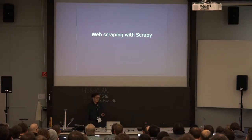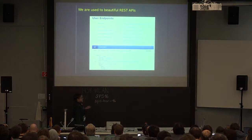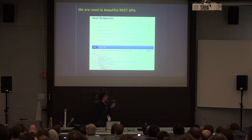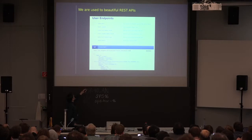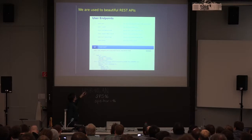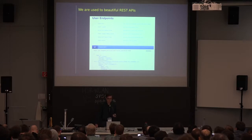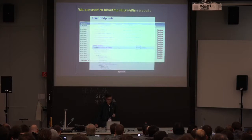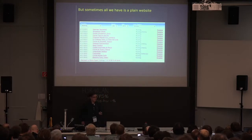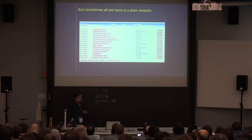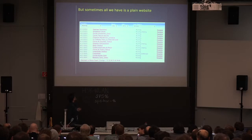So — web scraping with Scrapy. We're all used to beautiful REST APIs. I've taken an example here from Instagram: you have your resources, a beautiful description of the JSON response, it's a no-brainer to call these REST services and get the data. But sometimes all we have is a plain old website, and for all these running sites there's no REST interface at all. So we somehow had to get to the data.